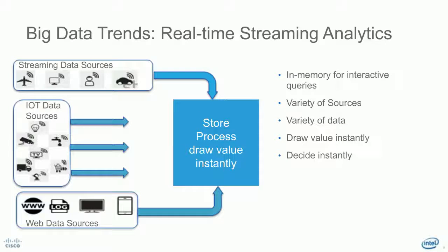Coming to the big data trend, we are going to have a lot of data generated from many sources: your traditional web clickstream data, log data, web data sources, all these standard Hadoop data sources. Then your IoT data, which through digital disruptions is going to be more and more part of our life, generating a lot of data where you need to unlock value instantly to know the alerts, whether it's sentiment analytics, what's happening in real time. Then the streaming data sources — social media is generating a lot of data, from devices or standard Web 2.0 kind of technologies.